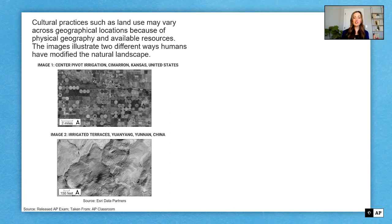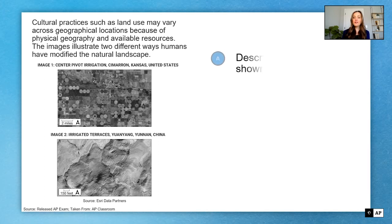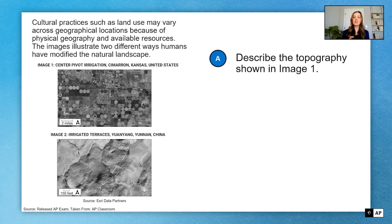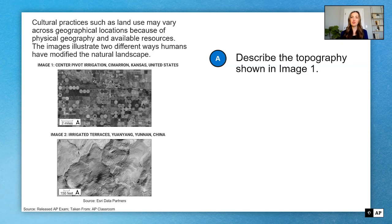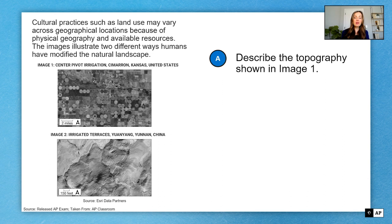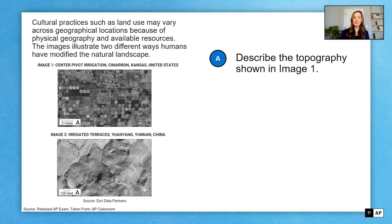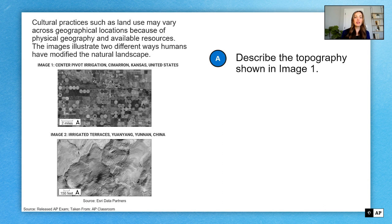Here's our question. We've got two pictures or two images with titles, and we've got our stimulus. Our first part of our question says, describe the topography shown in image one. Now, I may be tempted to just jump right into part A, but I remember that I need to take some time to look at the stimulus first.